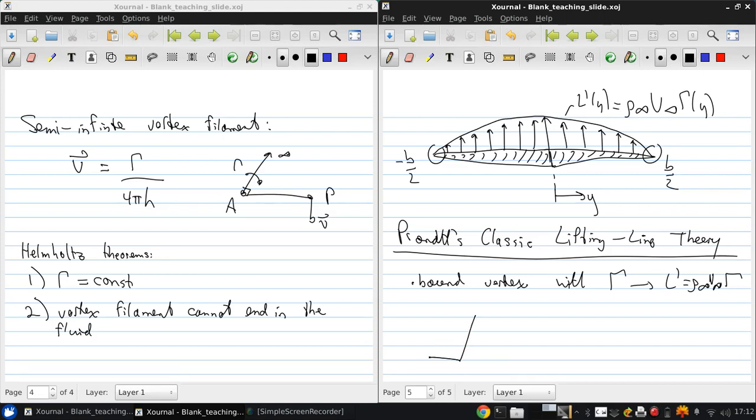we're going to go from this with a bound part of the vortex here and free parts of the vortex here, with the same extension to negative B over 2 and B over 2 for the same incoming velocity V infinity. So this is going from a finite wing to a model of it using something we call a horseshoe vortex.